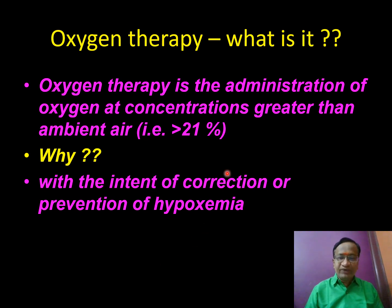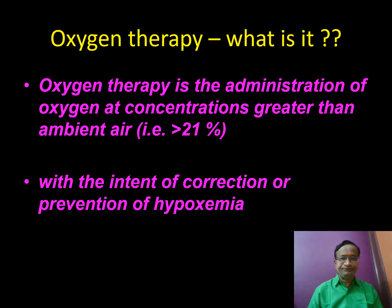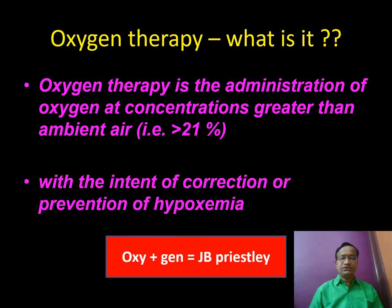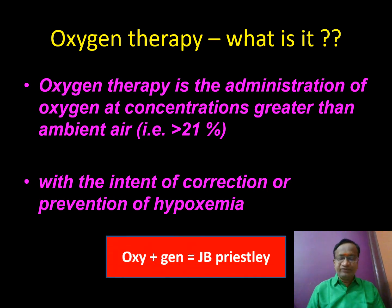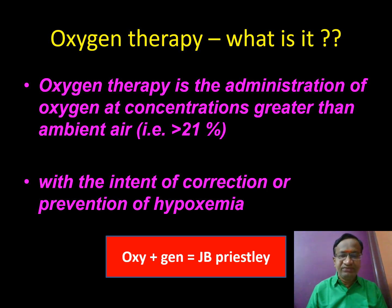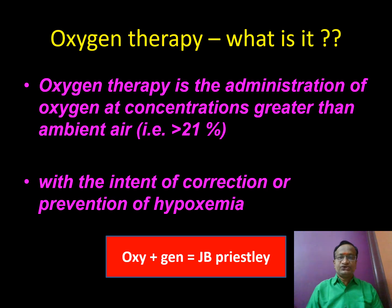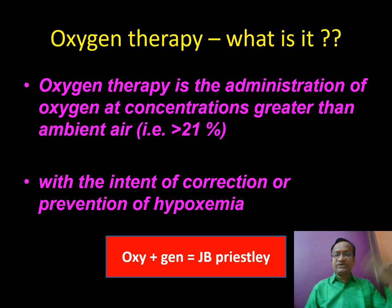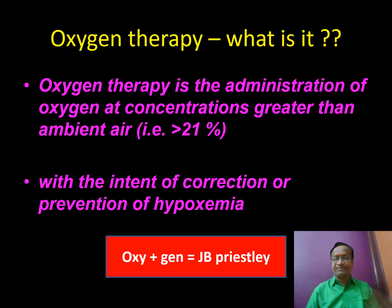Why do we give it? To correct or prevent hypoxemia. The word 'oxygen' comes from 'oxy' meaning acid and 'gene' meaning genesis — when we take in this gas, carbon dioxide, an acid, is produced.